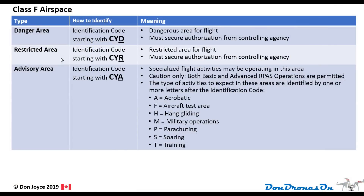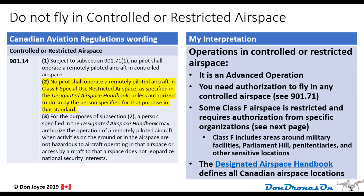Special restricted locations include Parliament Hill, Rideau Hall, the Confederation Bridge, and Niagara Falls. Restricted class F areas have identification numbers starting with CYR — R for restricted. There are also 10 detention facilities in Quebec that have basically temporary restricted areas around them. These restricted areas are specifically called out in the 2019 Canadian RPAS regulations in rule 901.14: no pilot shall operate a remotely piloted aircraft in class F special use restricted airspace as specified in the DAH unless authorized.